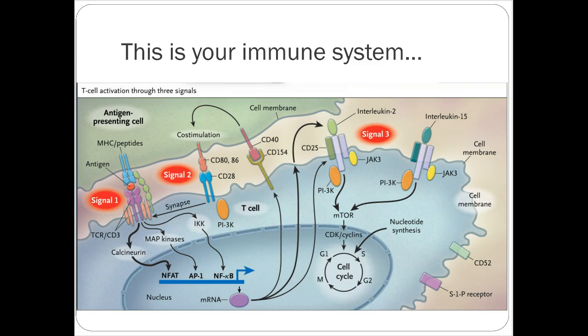This is a nice diagram of all the different receptors on a T cell and how everything works together as far as signaling pathways. When I talk about interleukins, different CD-type receptors, mTOR, calcineurin — all that type of stuff — that's where this comes back into.